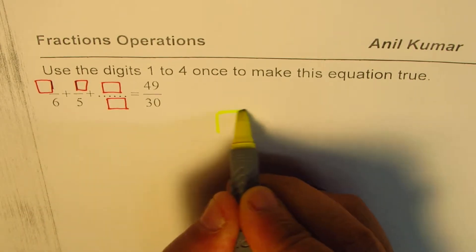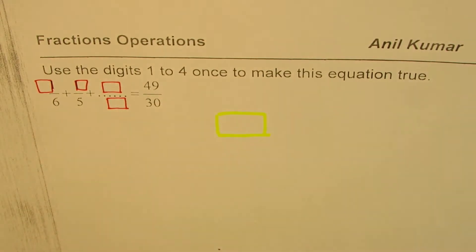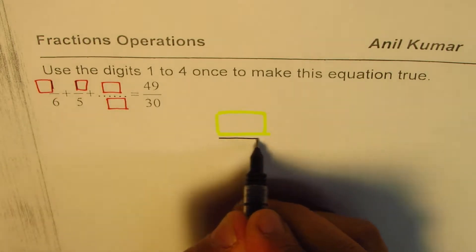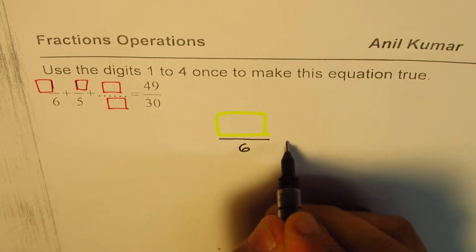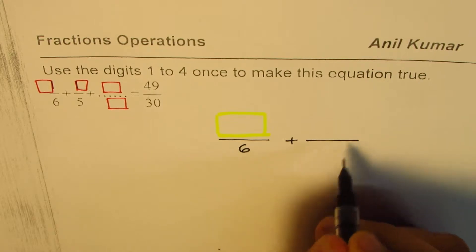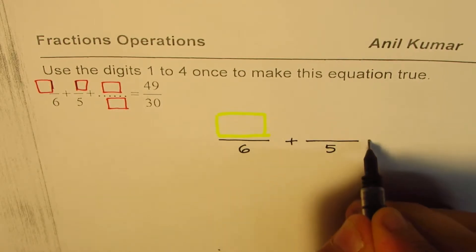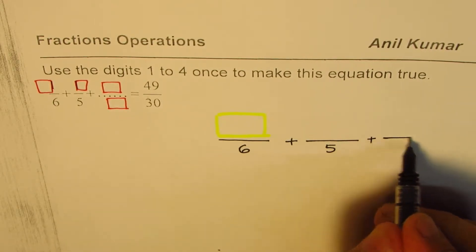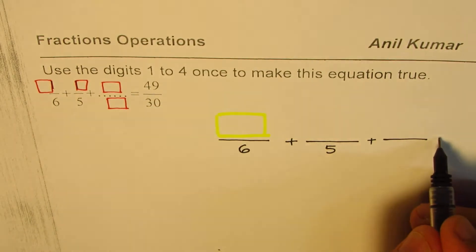What we have here is four blank spaces. One blank space, for example, is written as something over 6 plus blank space on the top over 5 plus blank space on top and bottom equals 49 over 30.